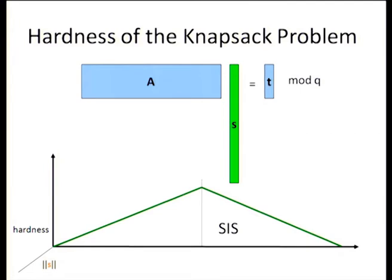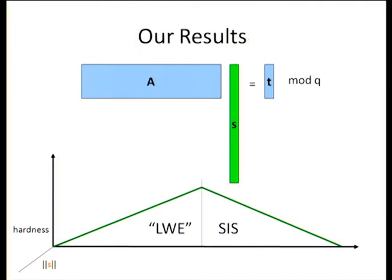Given A and T, the problem is to find a small S prime such that A S prime equals T mod Q. This is the knapsack problem. The hardness depends on the size of S you're asked to find. The optimal hardness is where S is basically unique. As you allow the coefficients of S to be bigger, the problem becomes easier; if coefficients are too small, it also becomes easier. In designing lattice-based constructions you want the knapsack problem to be as hard as possible.